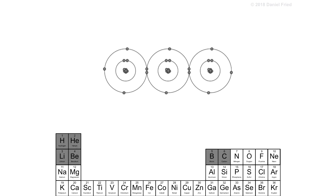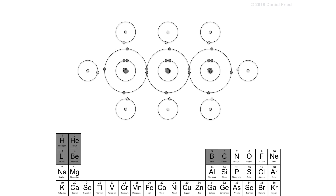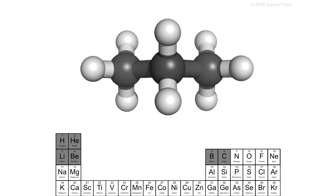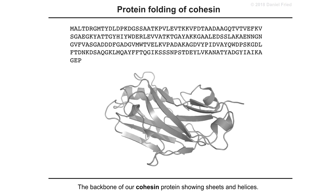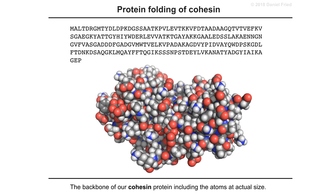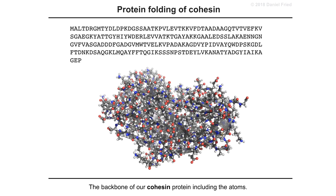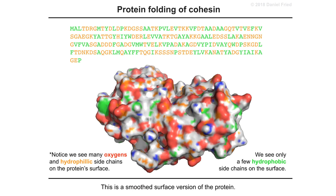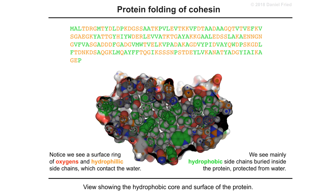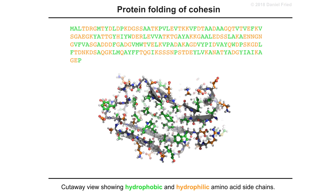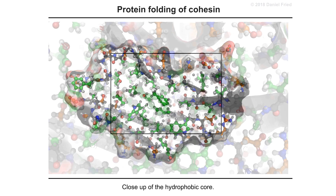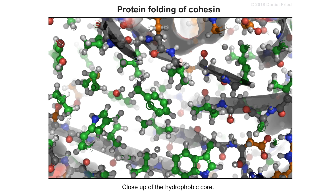Our animated lessons begin simply, helping students understand how atoms come together to make small bonded structures like this propane molecule. These simple concepts set the stage for understanding how complex molecular structures work. This lesson is about the link between amino acid sequence and protein structure. Amazingly, even young students can learn to decode the meaning of everything that you see here.